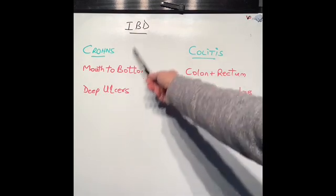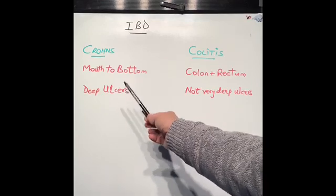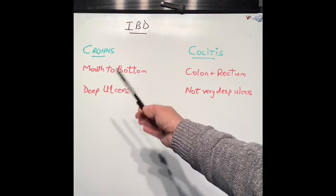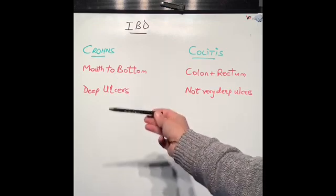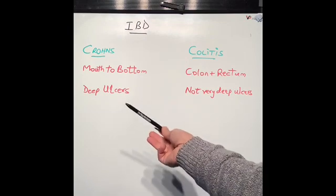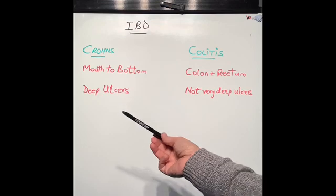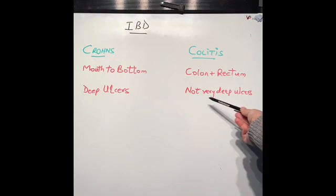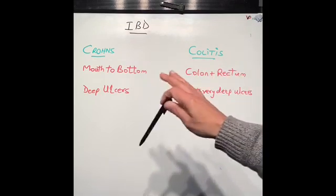The ulcers in Crohn's disease are very deep, so these patients get lots of complications with abscesses and fistulas — tunneling between one part of the intestine to the skin, to the vagina, to the bladder, or between loops of the small or large intestine. These complications are far more uncommon in colitis because the ulcers are quite shallow and not very deep.